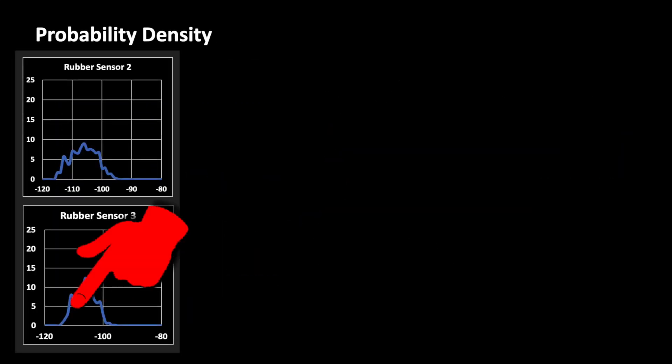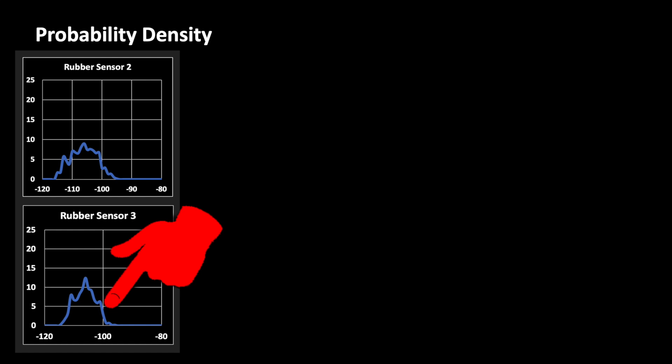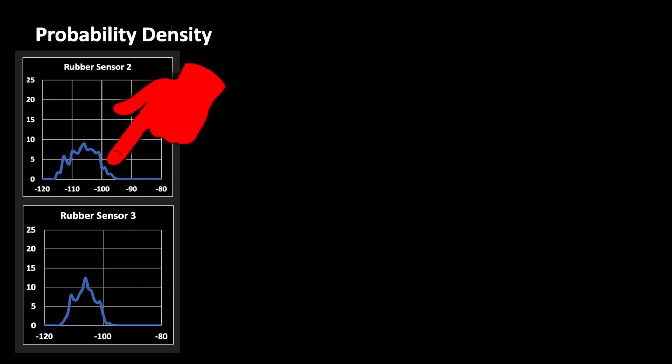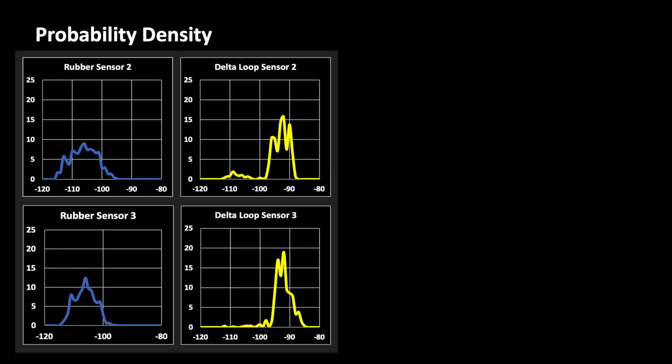The variance is different, because the signal path for sensor 3 depends on activities in the house, while for sensor 2 it's changing a bit due to the weather conditions. Now, we are looking at the statistics for the delta loop. The mean signal strength is significantly higher than for the rubber coil and in addition the variance is lower.